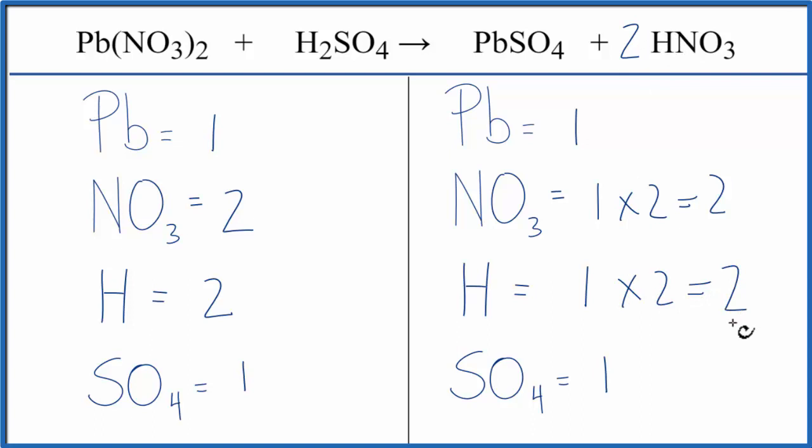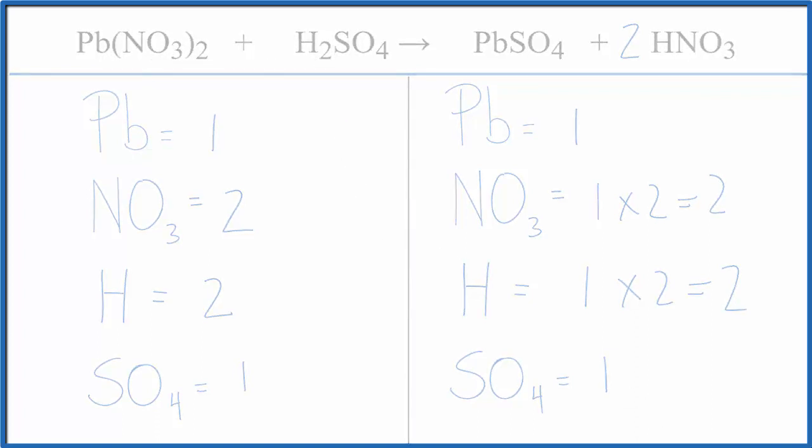And it looks like this equation is balanced. That's it. That's really all we needed to do. Again, you can see the value of considering these polyatomic ions to be just one item, and how quick we were able to balance this equation. This is Dr. B with the balanced equation for lead two nitrate plus sulfuric acid. Thanks for watching.